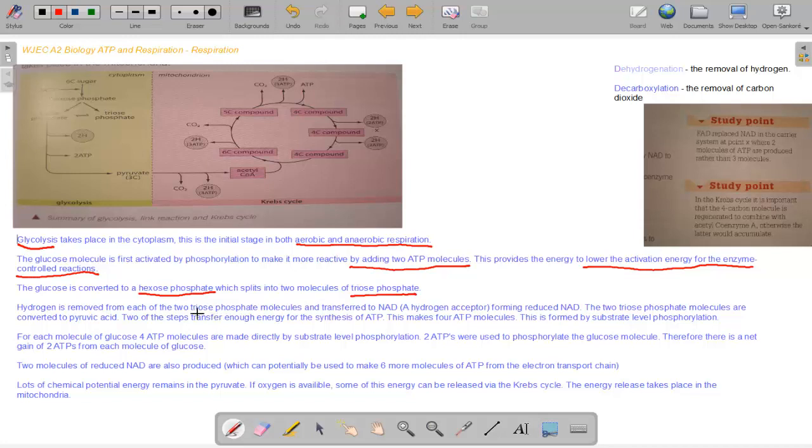So hydrogen is removed from each of the two triose phosphate molecules and transferred to NAD, a hydrogen acceptor molecule, forming reduced NAD. So oxidation is loss, reduction is gain of electrons. The two triose phosphate molecules are converted to pyruvic acid. Two of the steps transfer enough energy for the synthesis of ATP, making four ATP molecules. This is formed by substrate level phosphorylation. For each molecule of glucose, four ATP molecules are made directly. Two ATPs were used to phosphorylate the glucose molecule, therefore there is a net gain of two ATPs from each molecule of glucose. Two molecules of reduced NAD are also produced, which potentially may be used to produce six more molecules of ATP for the electron transport chain.